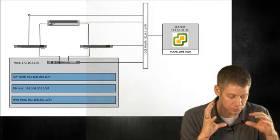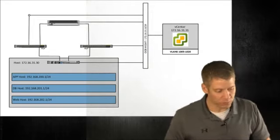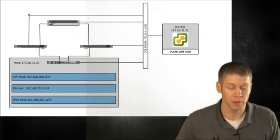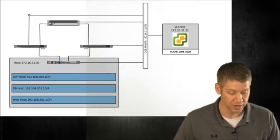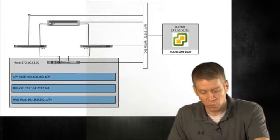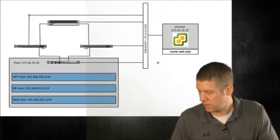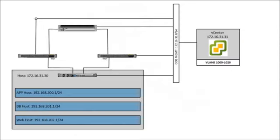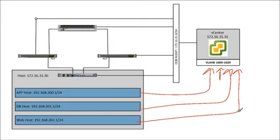Let's just get down and do it. We have a vCenter set up at 172.16.31.31, with one ESXi host and three Ubuntu VMs. What we're going to do is integrate the APIC controller with the virtual machine manager - create a relationship, build the distributed virtual switch, and attach these VMs through the DVS. The port groups we traditionally use within vCenter are now basically EPGs within ACI.